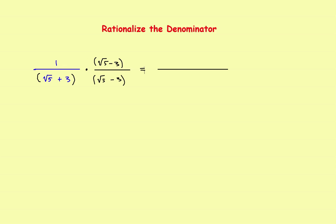In the top, you've got 1 times the square root of 5 minus 3, which is just the square root of 5 minus 3. In the bottom, you have to FOIL. The first terms: square root of 5 times the square root of 5 gives you 5. The outer terms: minus 3 times the square root of 5. The inner terms: plus 3 times the square root of 5. The last terms: positive 3 times negative 3 gives you negative 9. The whole point of multiplying by the conjugate is that these two middle terms always cancel out because of the plus and minus, which gets rid of the square root.